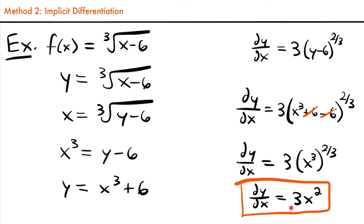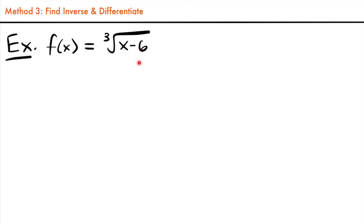We found the same answer using implicit differentiation. Now let's look at this same example one more time with a third method that will still get us the same answer. Here's the same function, f(x) equals the cubed root of x minus six. The third method is pretty straightforward: we're just going to find the inverse and take the derivative of it. The first thing we do is rewrite our function by changing f(x) to y, so y equals the cubed root of x minus six.